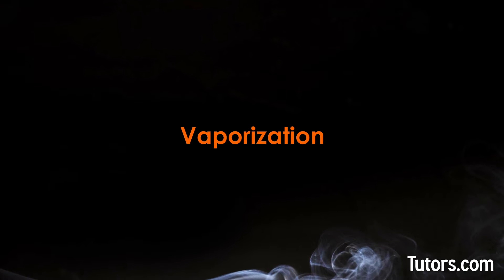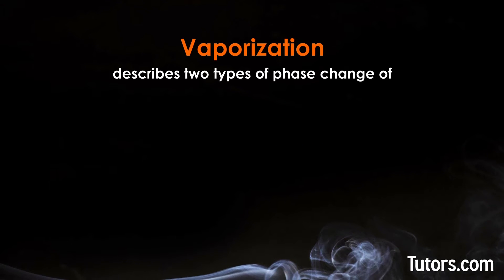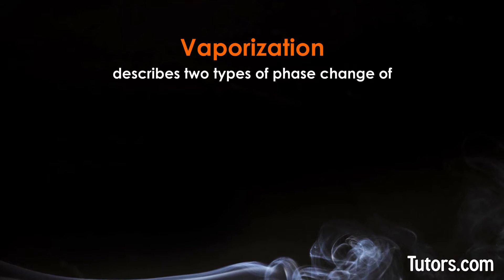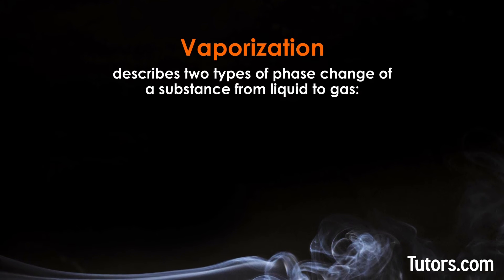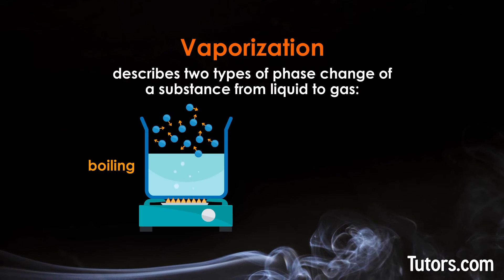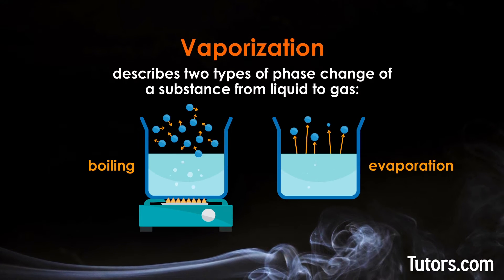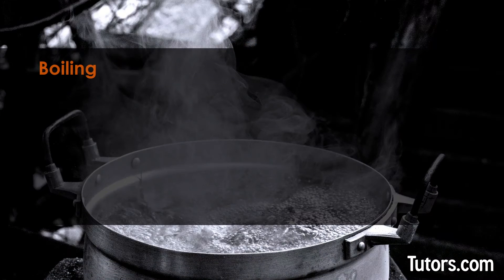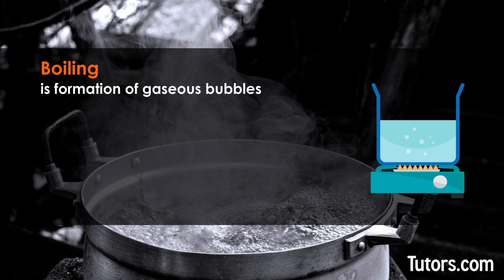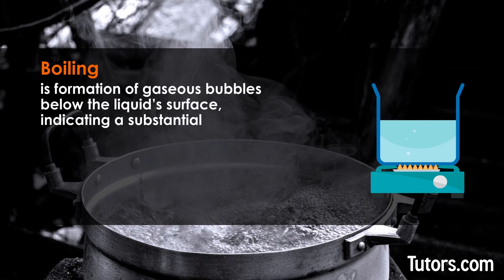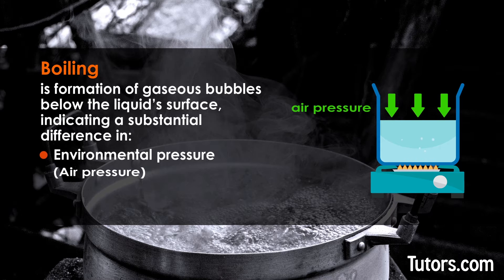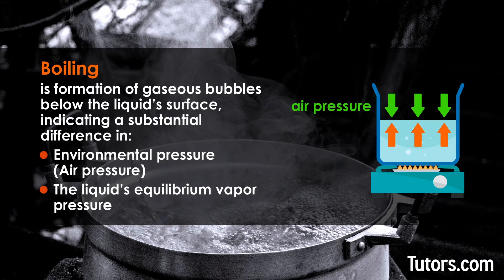Vaporization describes two types of phase changes of a substance from liquid to gas: boiling and evaporation. Boiling is a formation of gaseous bubbles below the liquid's surface, indicating a substantial difference in environmental pressure, air pressure, and the liquid's equilibrium vapor pressure or vapor pressure.